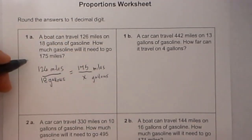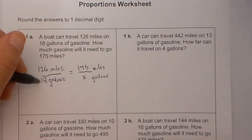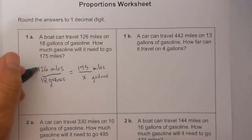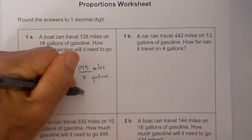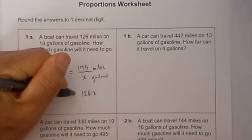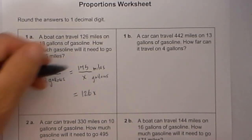Now I practice a cross product. So I take 175 times 18 and 126 times x. So I will go 126 times x is equal to, let's see,